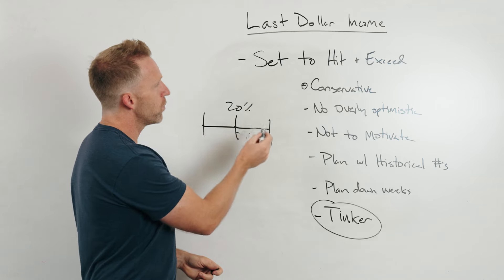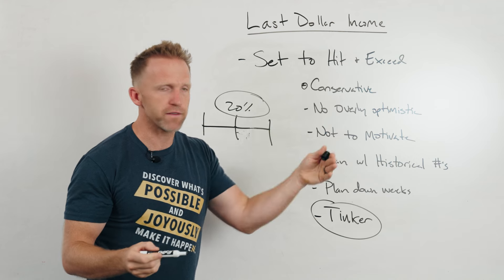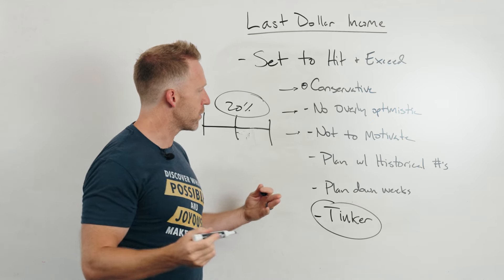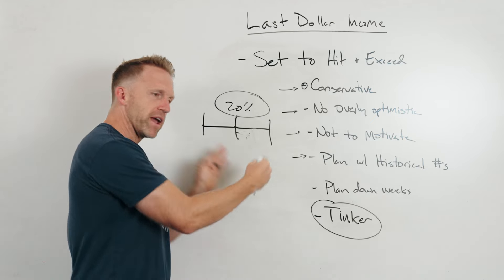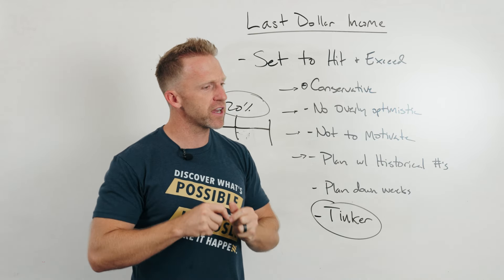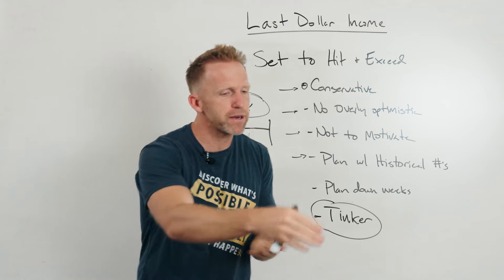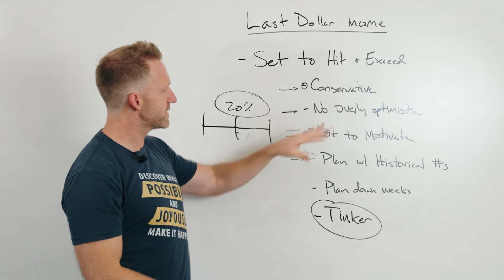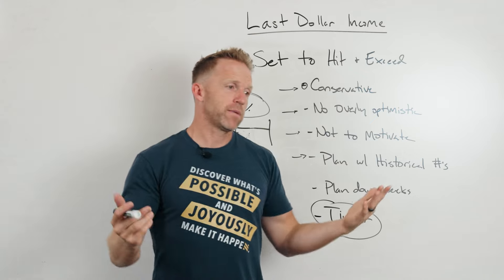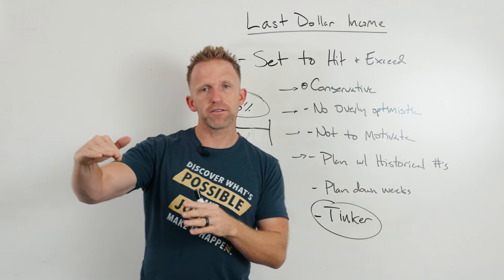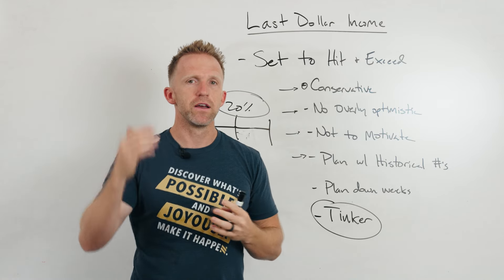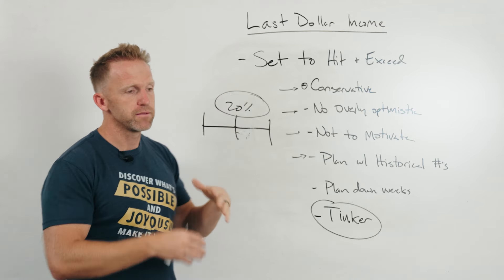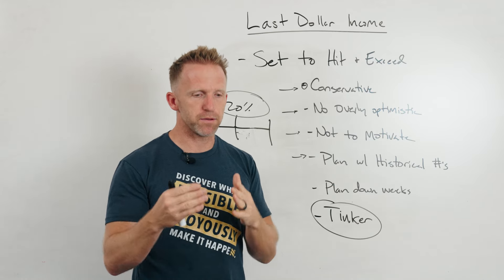Don't be overly optimistic when building the goals and plan for the year. Don't use it to motivate — that was one of our mistakes. We were very ambitious and wanted to grow fast, so we set big goals. But big goals don't necessarily help you make more money. When making your business plan, we don't make it to motivate us or inspire us — we make it because we can absolutely guarantee we're going to hit it. Plan for down weeks: people get sick, go on vacation, holidays happen. Plan for the unexpected.